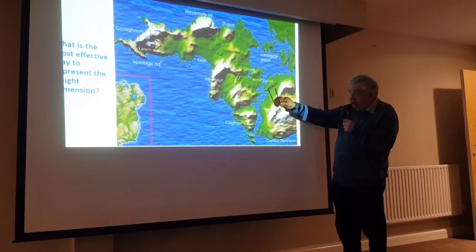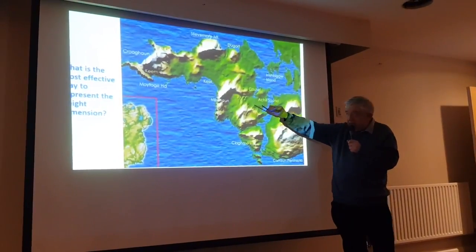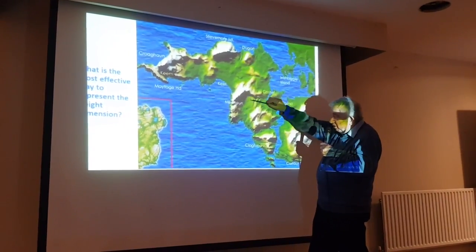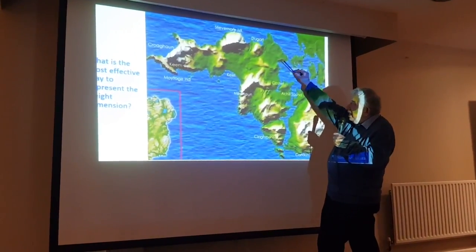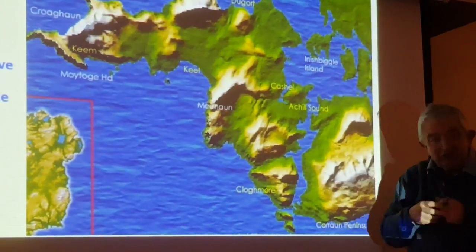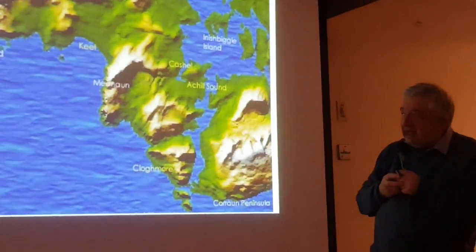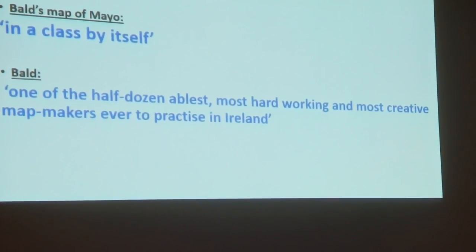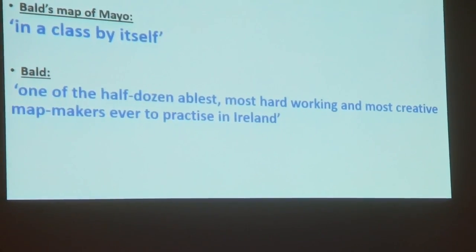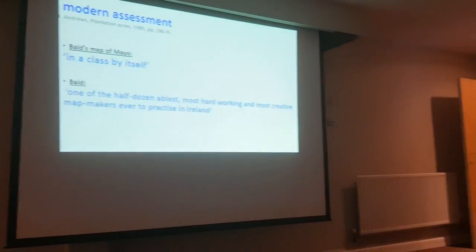Here's Achill Island — you see it's a very corrugated sort of look, because Slievemore is up there with various other bits of hills. What Bald was interested in was how to most effectively explain to people the physical nature of the landscape. Ball's map of Mayo is in a class by itself — he was described as one of the half dozen ablest, most hardworking, most creative map makers ever to practice in Ireland.